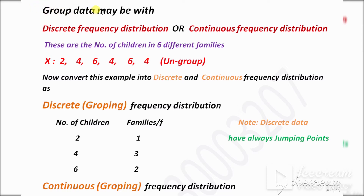Grouped data can be divided into two categories: discrete grouped data and continuous grouped data. This is an example of ungrouped data — X is the number of children: 2, 4, 6, 8, 4, 6, 4. These are ungrouped because there is no frequency given. Now we will convert this into grouped data, which is of two types: discrete and continuous.